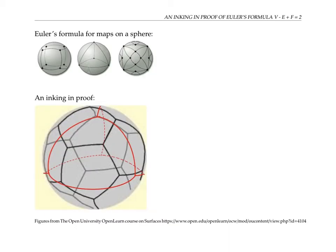In class, we noticed that for any polyhedron or any map on a sphere, the number of vertices minus the number of edges plus the number of faces was equal to 2.